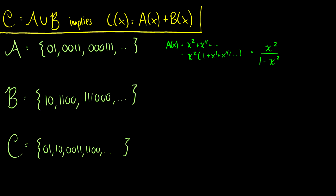Suppose we have B, which is the same concept, but we have ones followed by zeros. So this has the same generating function, just x² over 1 minus x².